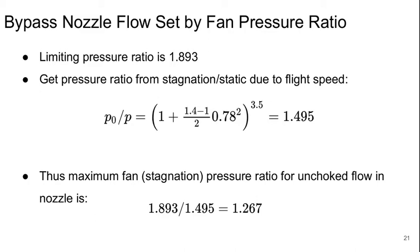So what we know is that our limiting pressure ratio is 1.893, and we can get our pressure ratio associated with the forward movement of the aircraft. We've already shown this number earlier—it's about 1.5.